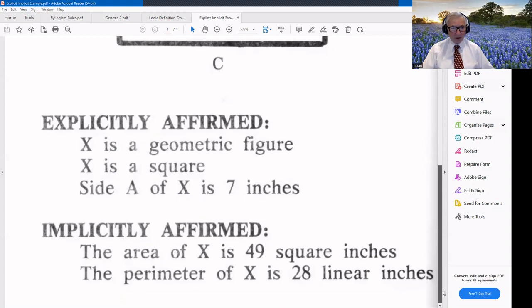Well, what's implied? Here's an affirmation of what's implied. Because we know the rules of geometry, we know, it's never said, it's not said here, but we know that the area of X is 49 square inches.